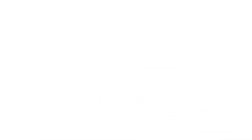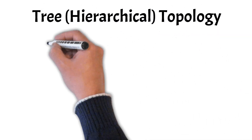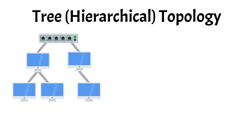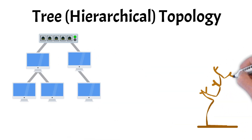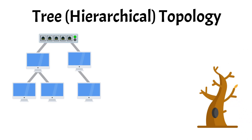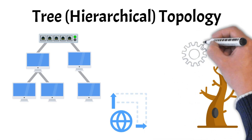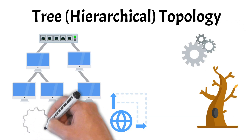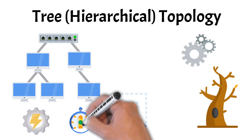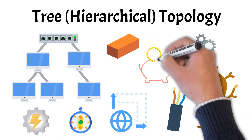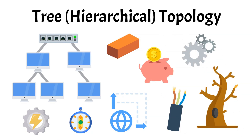Up next we have the tree topology, also known as the hierarchical topology. It organizes devices in a branching structure that resembles an upside-down tree. At the top sits the root node, such as a main switch or server, which connects to intermediate switches or other devices, and those connect to individual computers or smaller networks. This setup combines the structured organization of a star topology with the expandability of a bus — it's efficient and scalable, meaning you can easily add new branches without affecting the rest of the network. However, if a major connection breaks, entire branches below can lose access. Despite that weakness, the tree topology remains a stable and cost-effective choice for large organizations.